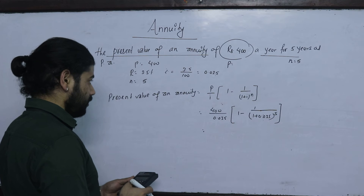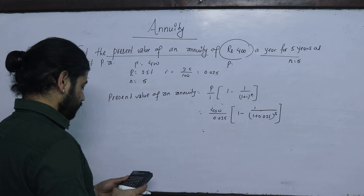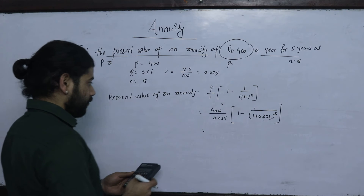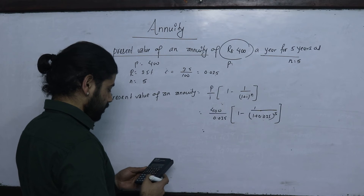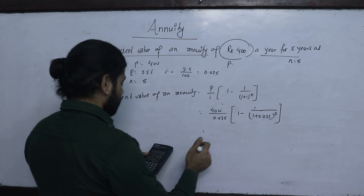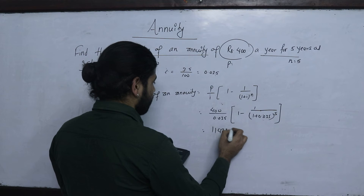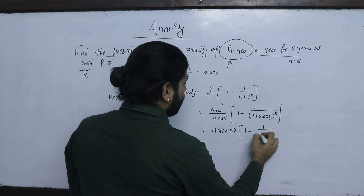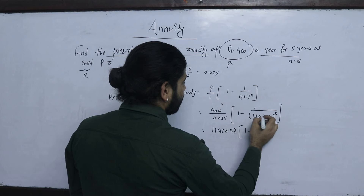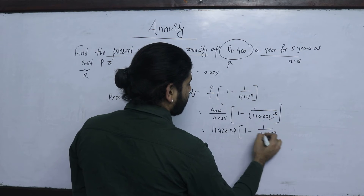First, 400 divided by 0.035 gives us 11428.57. Then we compute 1 minus 1 upon (1 plus 0.035) to the power 5.